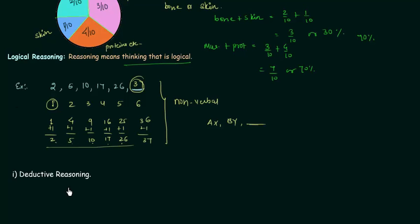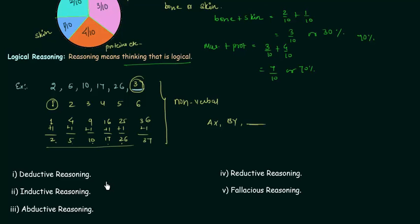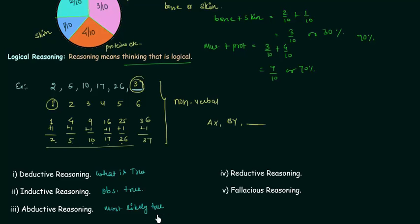The first type is deductive reasoning, the second is inductive reasoning, the third is abductive reasoning, the fourth is reductive reasoning, and the fifth is fallacious reasoning. In deductive reasoning we find out what is true; in inductive reasoning we find out what is observably true; in abductive reasoning we find out what is most likely true; and in reductive reasoning we find out what we think is true.